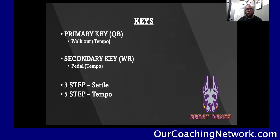Let's talk about keys. Our primary key is the quarterback. When we're in an off man position, we have our eyes on the quarterback reading for three-step, five-step drop back, play action — all those things we can get from the quarterback. Initially we're going to walk out with a walkout tempo on the snap. Our secondary key is when our eyes transition from quarterback to receiver. We get our three-step key, our five-step key, our play action key, so we know what to expect from the route. We'll tempo pedal off the quarterback, and if we get a three-step we'll set our feet getting ready to plant and drive. If we get a five-step drop, we're going to tempo our pedal to the receiver.